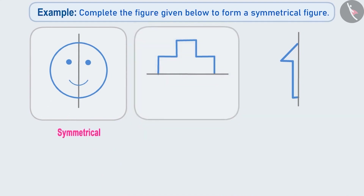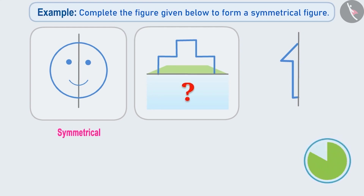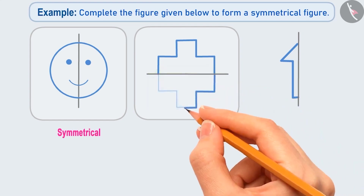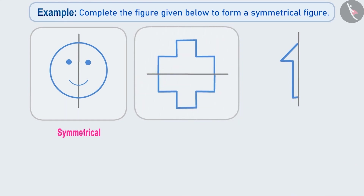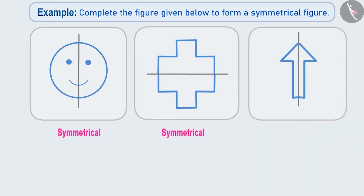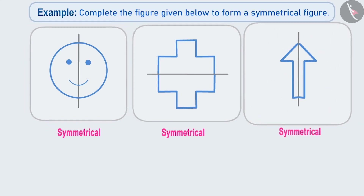Now let's talk about the second figure. We have been given the top part and have to find the bottom part. Suppose the upper part is on the ground and we are seeing its reflection below in water — imagine how this figure will look. Give it a thought. Absolutely right. It will look like this. In this way, we can complete the second figure. Similarly, if we complete the third figure, we will get the shape of an arrow. It is also a symmetrical figure.